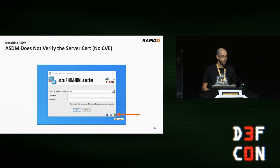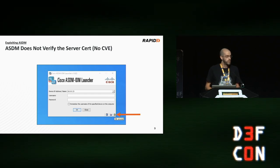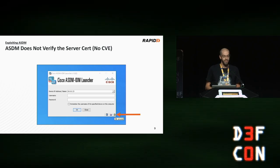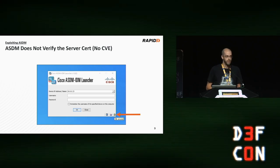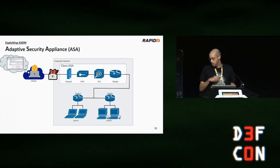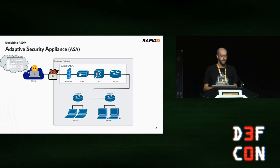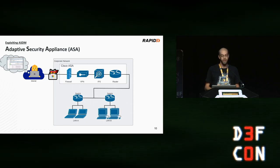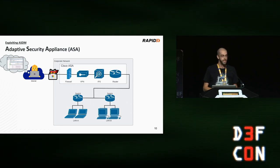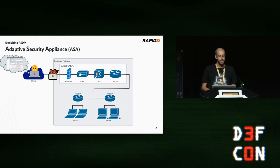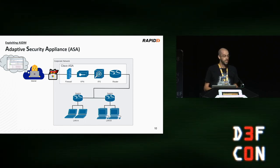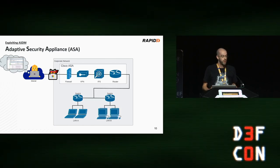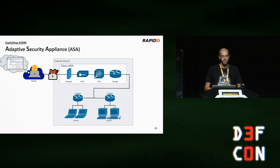What's interesting is that while the communication happens over SSL, the ASDM client never verifies the ASA's server certificate. This means a man-in-the-middle can monitor or even modify the communication between the ASDM client and the ASA itself, essentially allowing full control of the ASA as long as the attacker can establish that man-in-the-middle position.